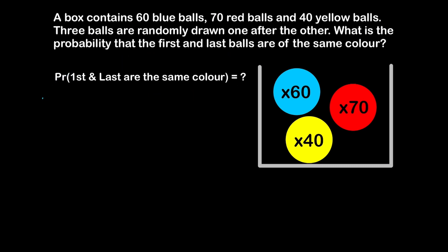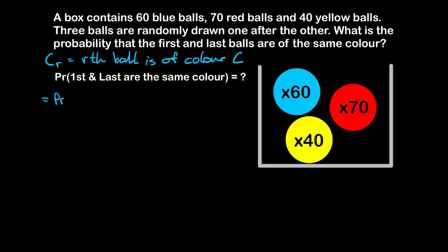Before we write this probability statement, let's define some events. Let the event C_r be the event that the rth ball is of color C, where C is the capital letter that begins each color word — so B for blue, R for red, and Y for yellow.